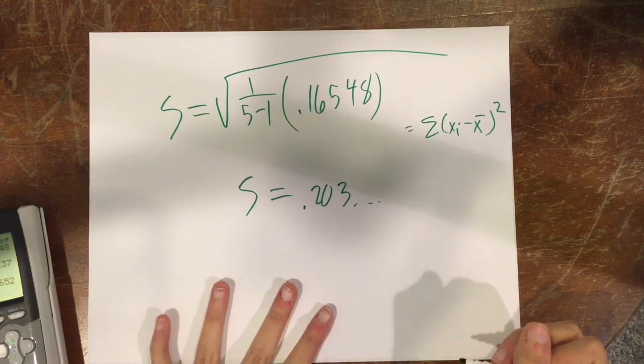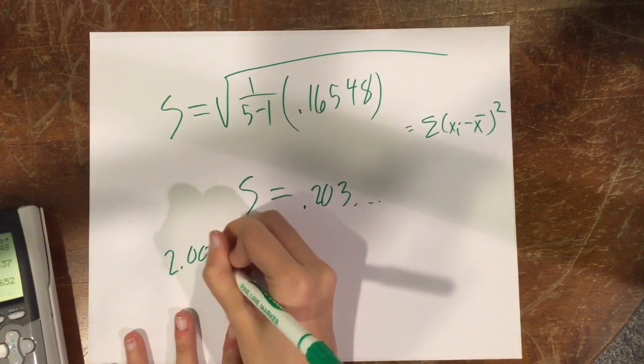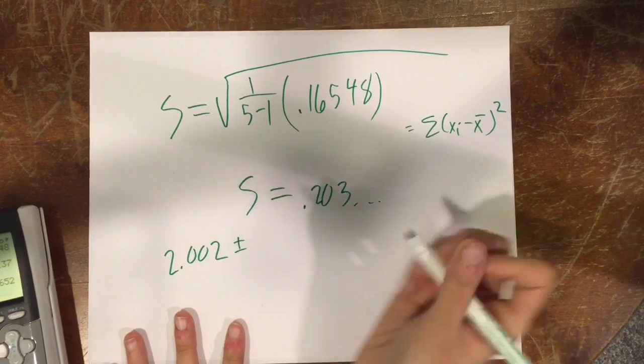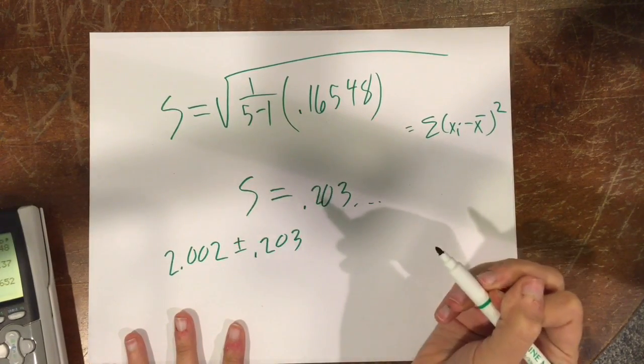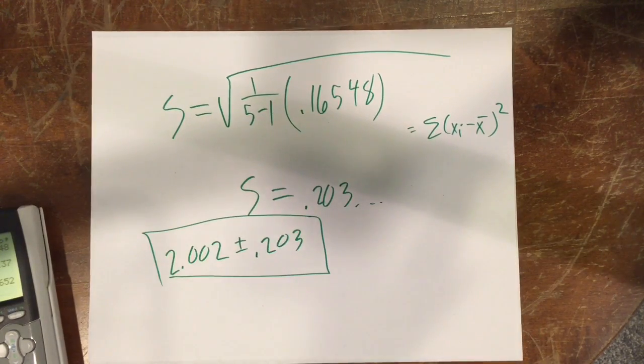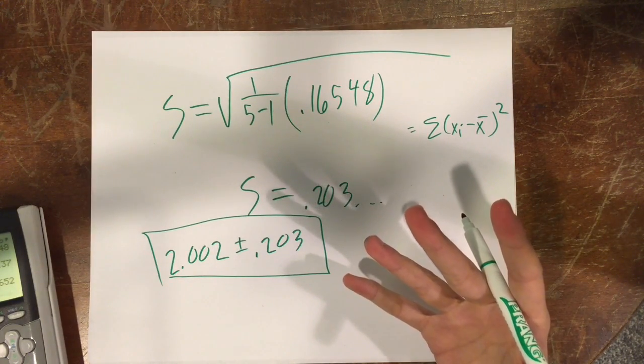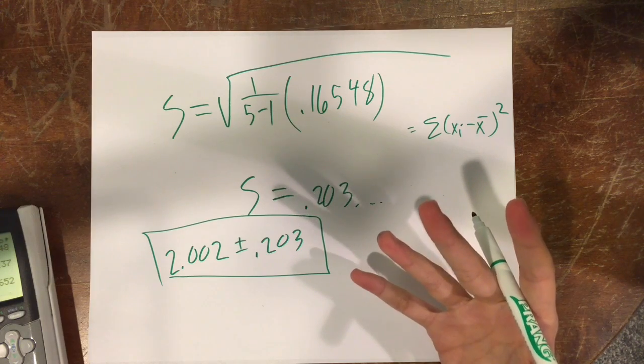So now, basically, what you just do, you take your average, which was 2.002, plus or minus 0.203. And that's your standard deviation error. Basically, that is pretty much it. It's a very simple way of doing it.